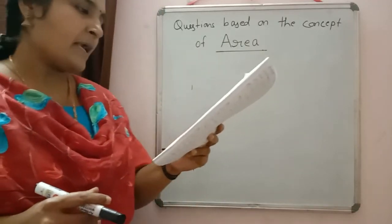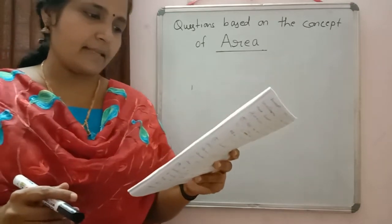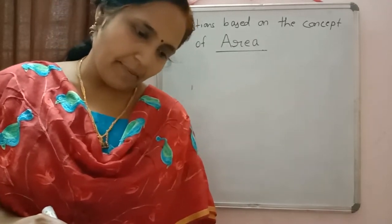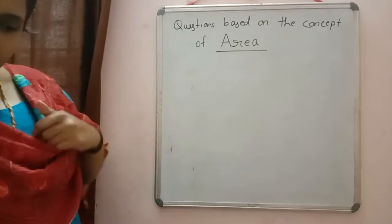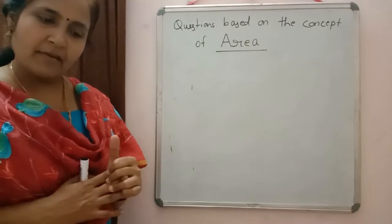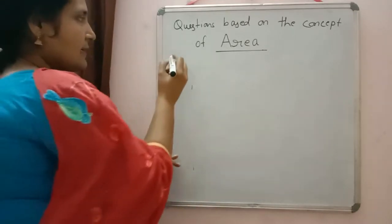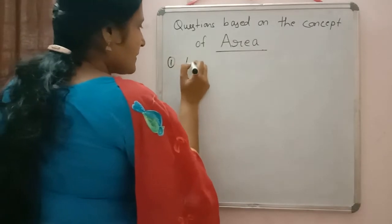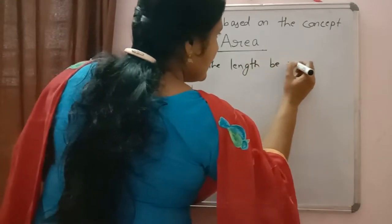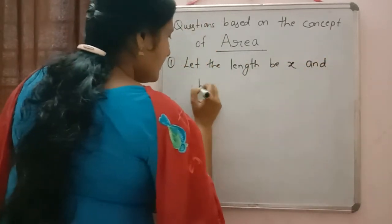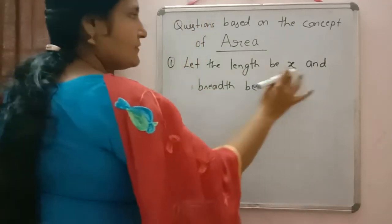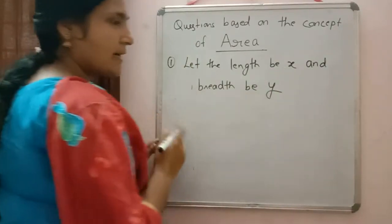In the first question, it is written: in a rectangle, the length is increased and breadth is decreased by 2 units. We need to find the length and breadth. We can take: let the length be x and breadth be y.